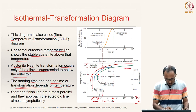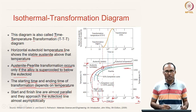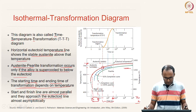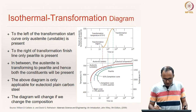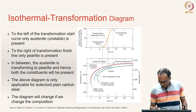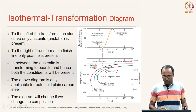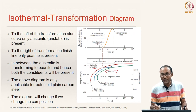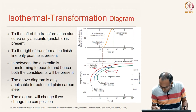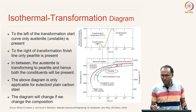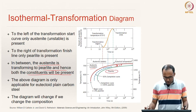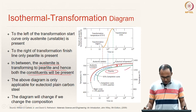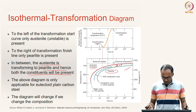The start and finish lines are nearly parallel and approach the eutectoid line asymptotically. To the left of the transformation start line, austenite is unstable; to the right of the transformation end line, only pearlite is present. In between, both austenite and pearlite coexist as austenite is progressively transforming to pearlite. This portion of the diagram applies only to eutectoid plain carbon steels — changing composition changes the diagram.